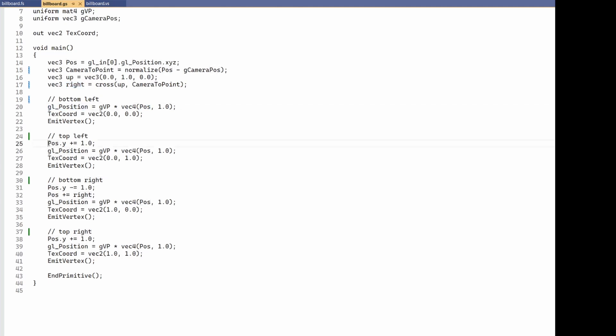The first point is the original one. Then we go up, then down and to the right, and finally up. Remember that we have to transform each vertex by the view projection matrix and call EmitVertex. Also notice that for each vertex we manually set the texture coordinates to fully cover the texture: (0,0), (0,1), (1,0), and (1,1). This completes the geometry shader.